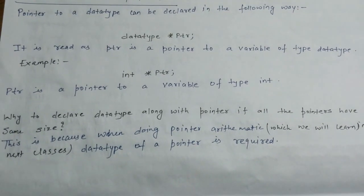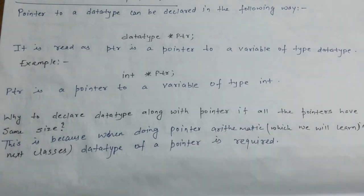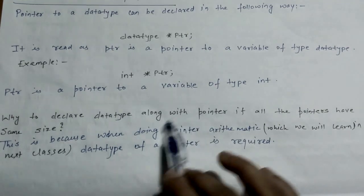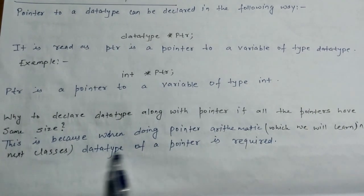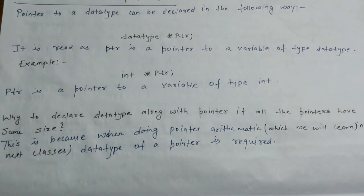You must be wondering: if all pointer variables have the same size within a system, why do we need to specify the data type of the pointer? This is because when doing pointer arithmetic, which we will discuss in upcoming lectures, the data type of a pointer is required. Otherwise we can't do pointer arithmetic using that pointer variable.